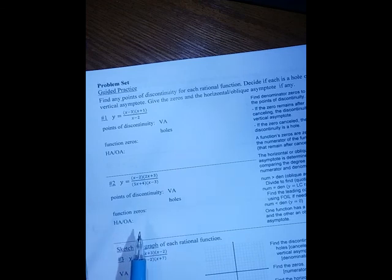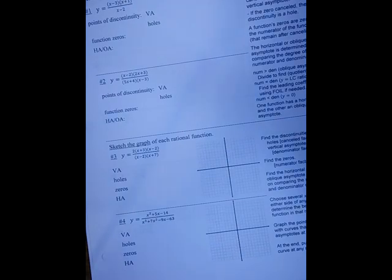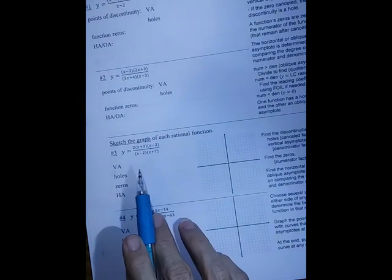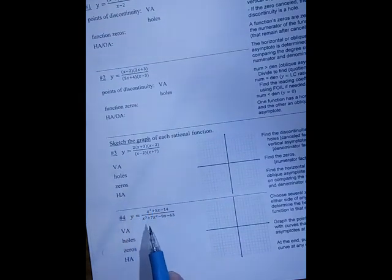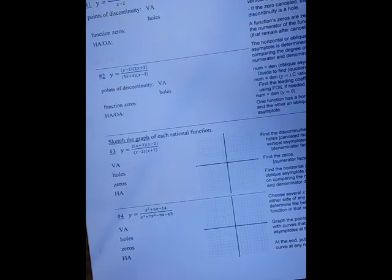The same is true for the second question. In the third and fourth questions, you're going to do the same thing, but then you're also going to sketch the graph. The first one is factored for you. The second one you will have to factor yourself. Remember to factor the bottom by grouping because there are four terms.